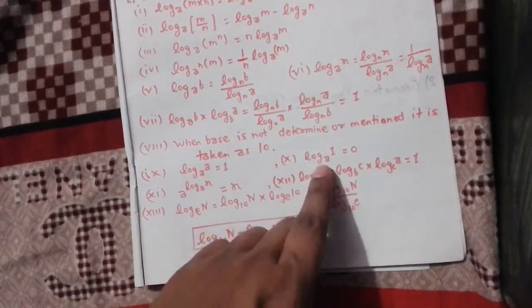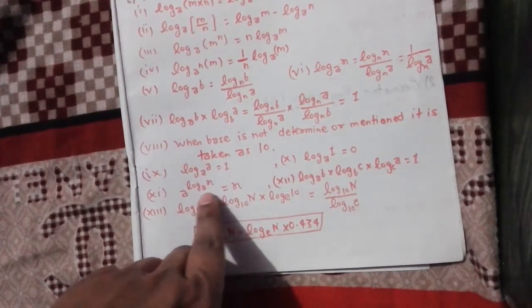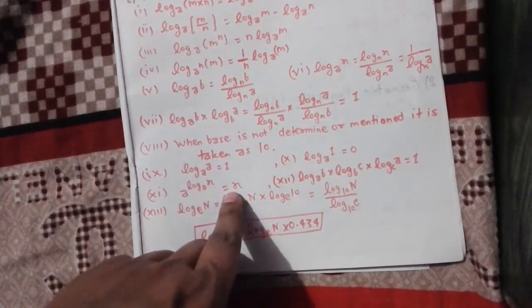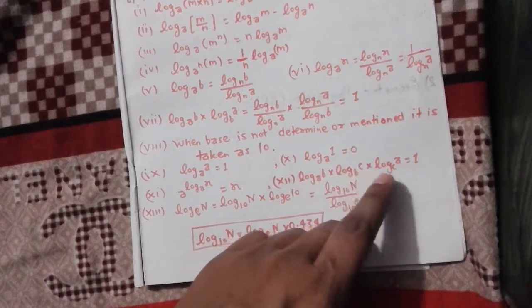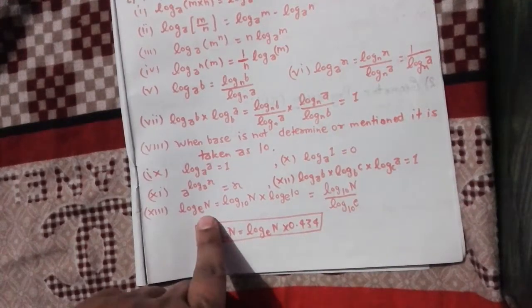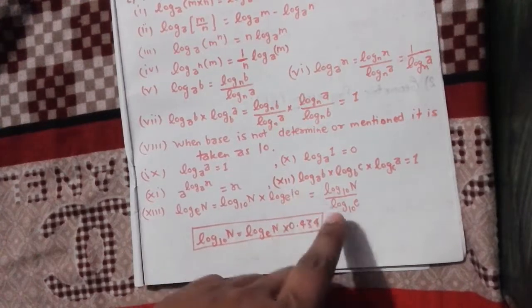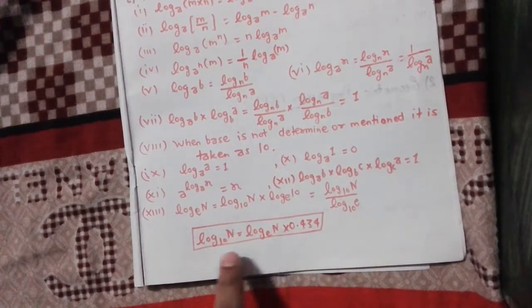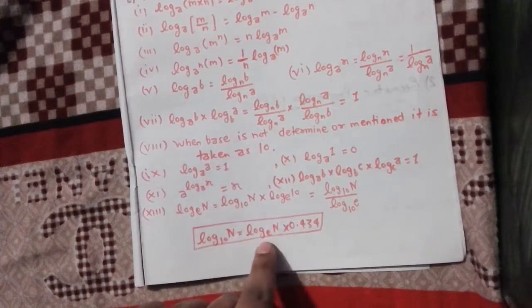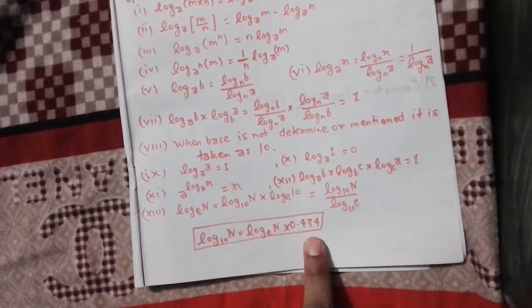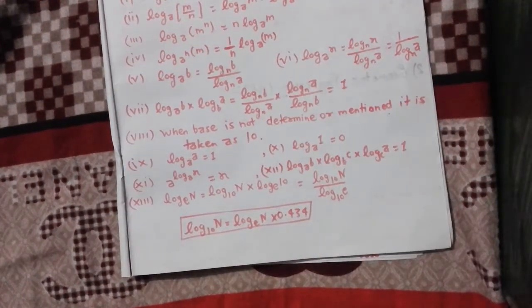Additional formulas: log_a m × log_b x × log_c r. Log_10 e. Log_10 a equals log_e n × 0.434. These are some formulas that we need to use.